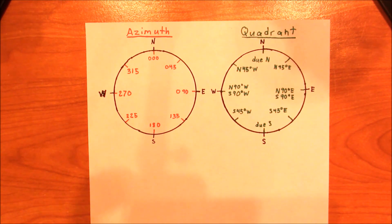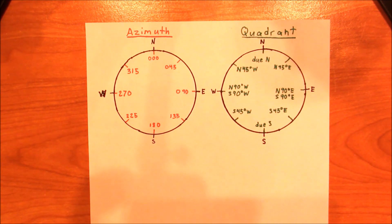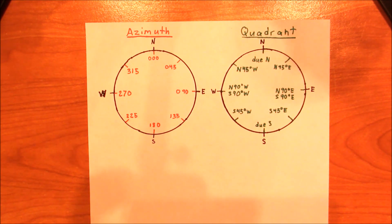In mathematics, we tend to use equations to try and represent lines and planes in space. However, in geology, we're not so mathematically inclined. Instead, we choose to use things like strike and dip to represent a plane, and then we use trend and plunge to represent a line.